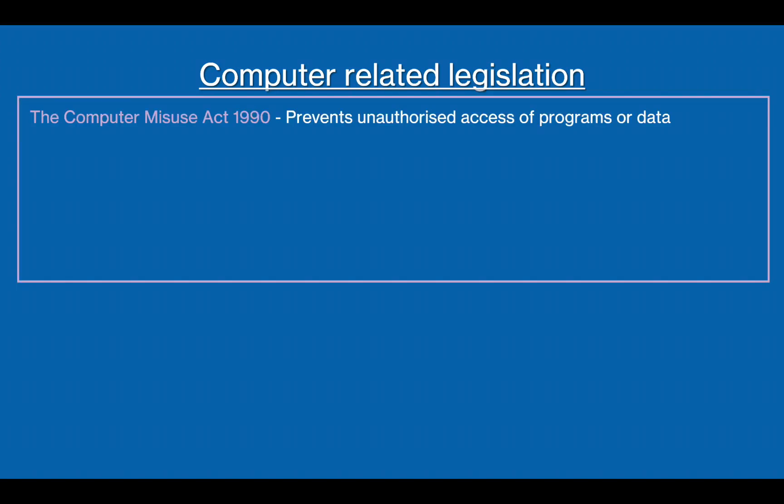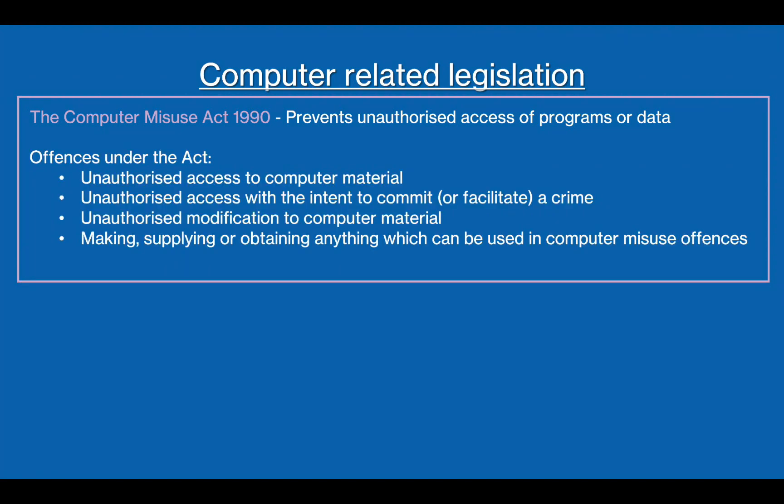Next we have the Computer Misuse Act of 1990. This law defines and criminalises a number of offences involving the use of a computer, such as unauthorised access to computer systems, and the sharing or modification of computer material. This includes accessing computers with the intent to commit any of these offences. Intent must be shown, as someone could accidentally access data without meaning to if a computer is not well protected.